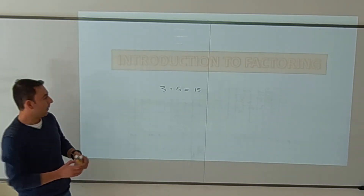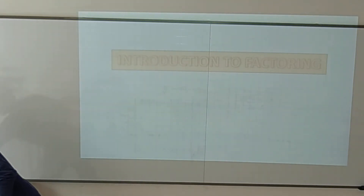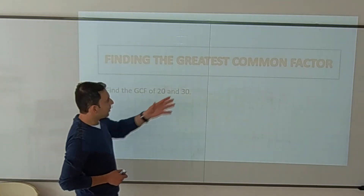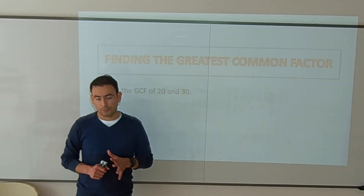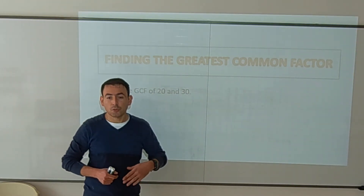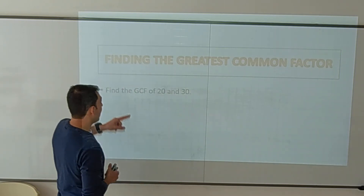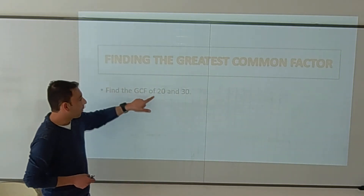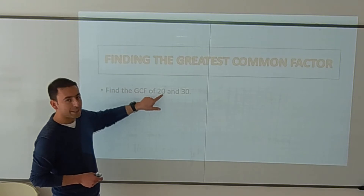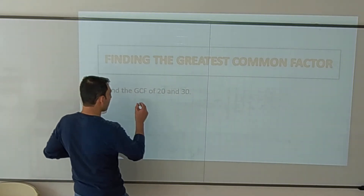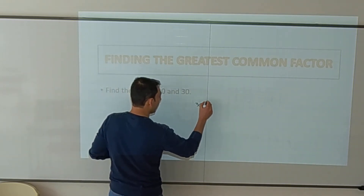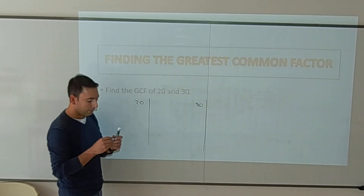Now let's talk about the greatest common factor. We know how to count the factors, but we have to find the greatest common factor to start factoring polynomials. To find the greatest common factor, we are going to use a very common strategy called prime factorization.